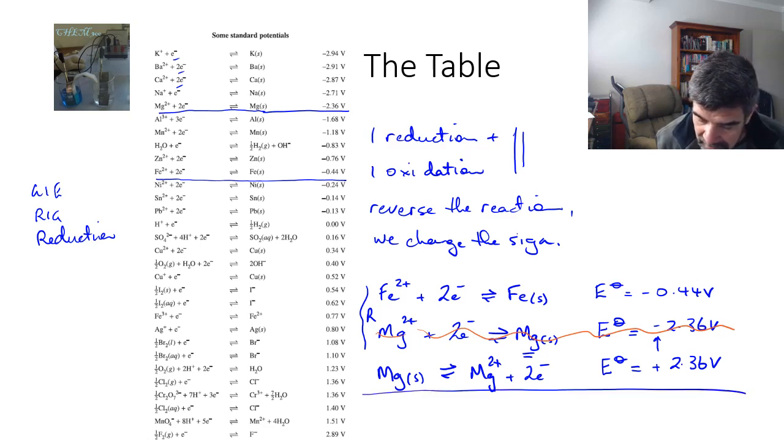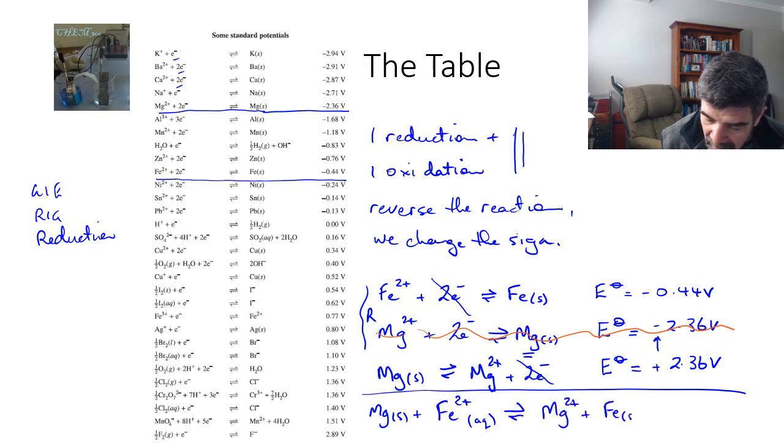When I put these together, the electrons are going to cancel out, and that's part of what I want to make sure happens. When I put magnesium solid into a solution of iron ions, I get magnesium ions being produced and iron solid as a precipitate, and the E° value is the two of these added together.